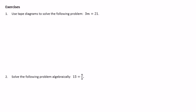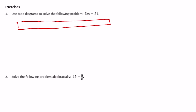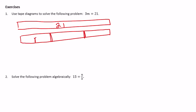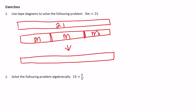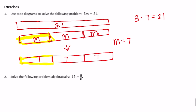Exercises, number 1. Use tape diagrams to solve 3m equals 21. Drawing two tape diagrams: one showing 3m as three equal m sections, and one showing 21. If we split 21 into three equal parts, we get 7. So each m is 7, meaning m is equal to 7. We can check: is 3 times 7 equal to 21? It is.